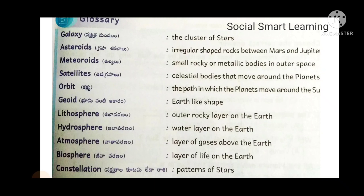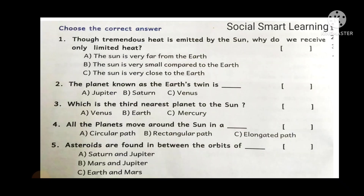Geoid means earth-like shape. Lithosphere — the outer rocky layer on the earth. Hydrosphere — the water layer on the earth. Atmosphere — the layer of gases above the earth. Biosphere — the layer of life on the earth. Constellation — a pattern of stars.